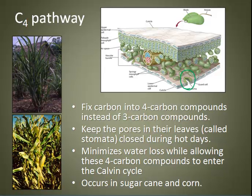Also, when the stomata are closed, oxygen cannot escape and therefore builds up inside the plant, inhibiting the Calvin cycle. The alternative pathways exist to help photosynthesis occur despite low levels of carbon dioxide when the stomata are closed. Plants using these pathways can carry out photosynthesis using the low levels of CO₂ available.